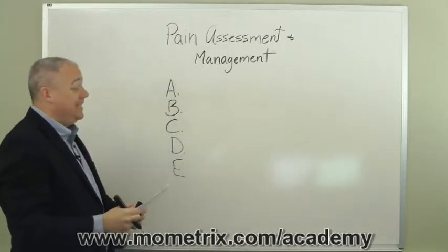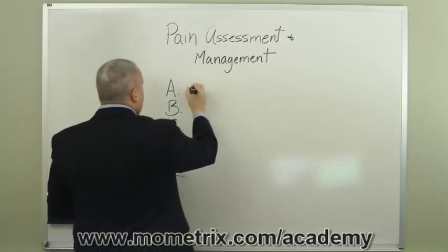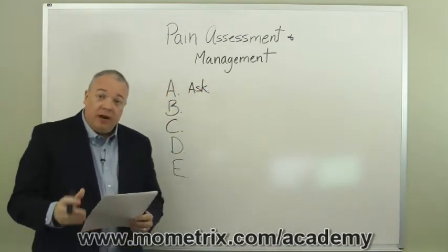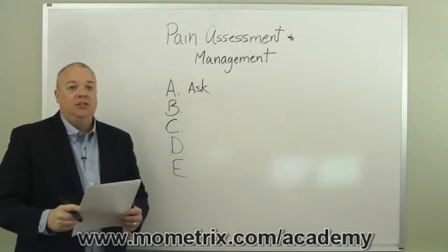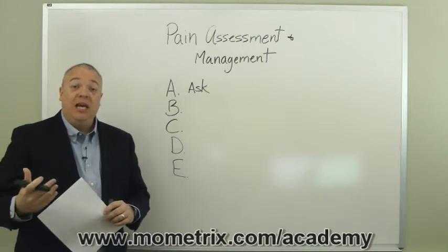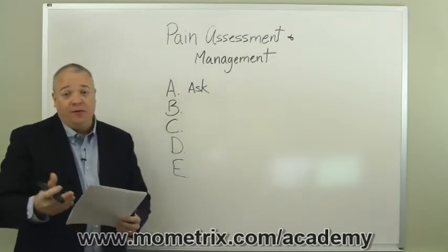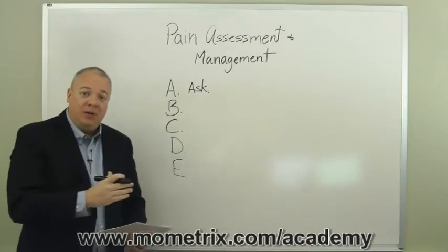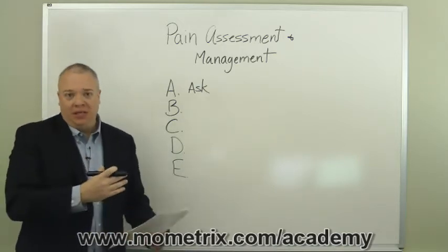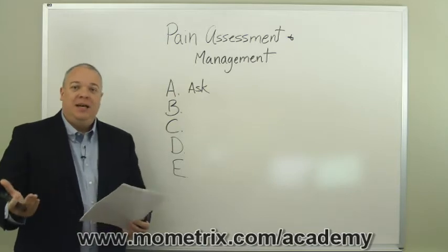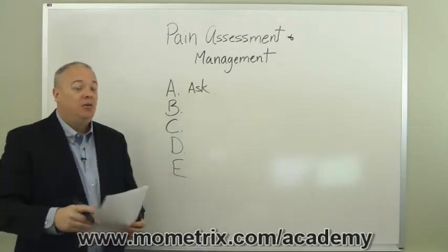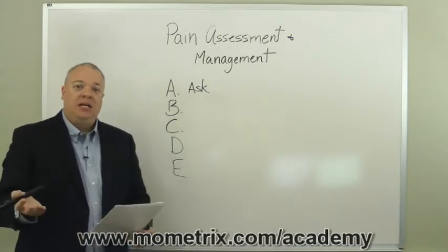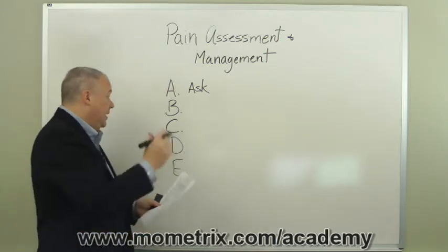Under A in the mnemonic for assessing and managing pain, we need to think of the word 'ask.' Ask the patient consistently and regularly about their pain, and when doing so make sure that you keep the same system or scale for them to judge by. For example, on a scale of 1 to 10 with 10 being the most pain and 1 being the least — don't switch it around, as that confuses the patient. Ask regularly and consistently, and keep the same scale every time.